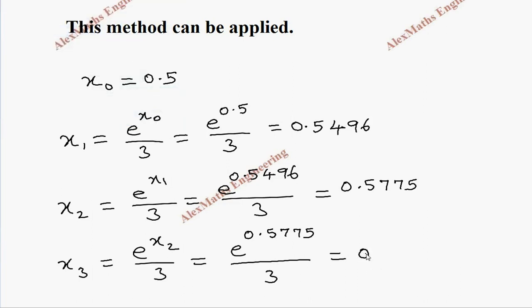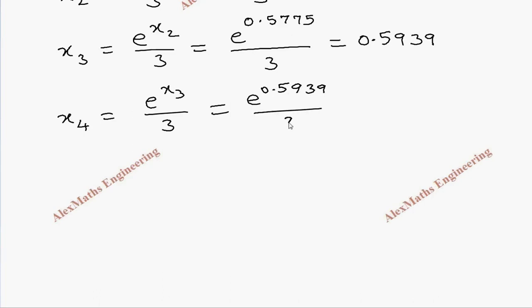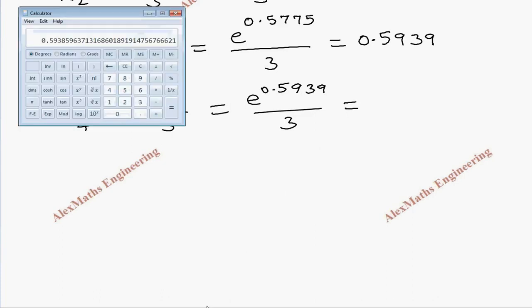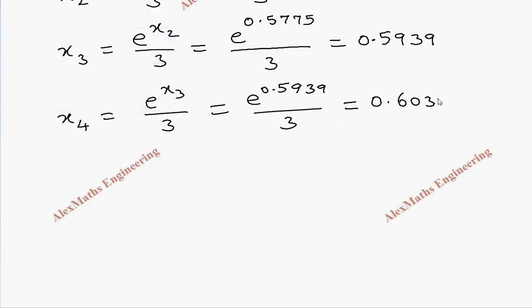In successive iterations: x₄ = e^(x₃) / 3 = e^0.5939 / 3. Calculating: 0.5939 → e^x → divide by 3 gives 0.6037, so x₄ = 0.6037.